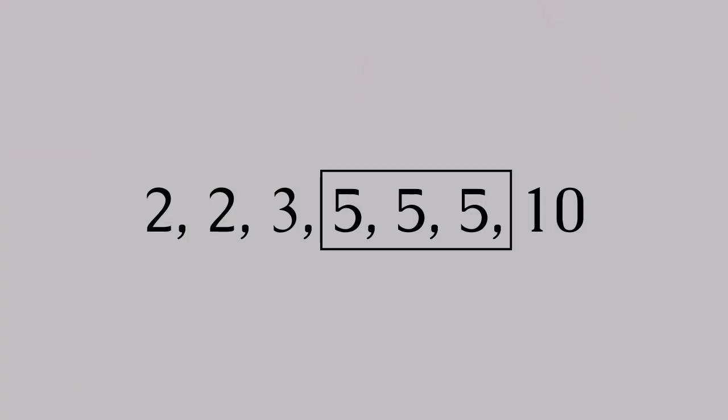Finally, the mode — this one's all about popularity. Which number makes the most appearances in your data? That's your mode. To demonstrate this, we need a larger data set, so let's try: 2, 2, 3, 5, 5, 5, 10. The number 5 appears three times, more than any other number, so that's our mode.